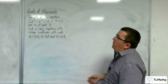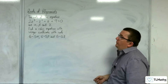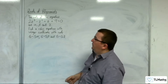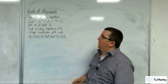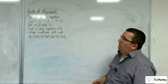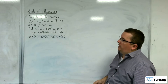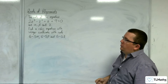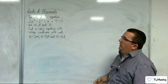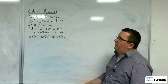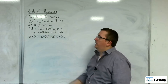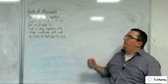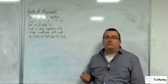In this video, the roots of the equation 2z cubed take away z squared plus z plus 9 equals 0 are alpha, beta, and gamma. Find a cubic equation with integer coefficients with roots 6 take away 5 alpha, 6 take away 5 beta, and 6 take away 5 gamma.